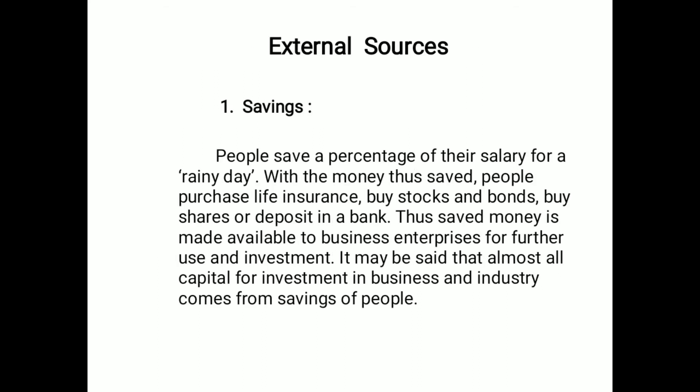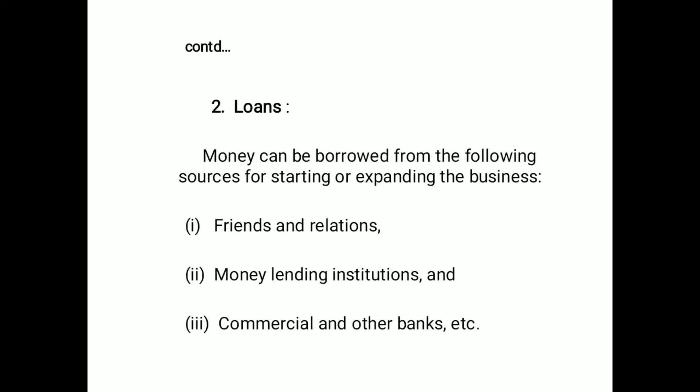External sources include, first, savings. People save a percentage of their salary for a rainy day. With the money thus saved, people purchase life insurance, buy stocks and bonds, buy shares, or make demand deposits in the bank. This saved money is made available to business enterprises for further use and investment. It may be said that almost all capital for investment in business and industry comes from the savings of people.